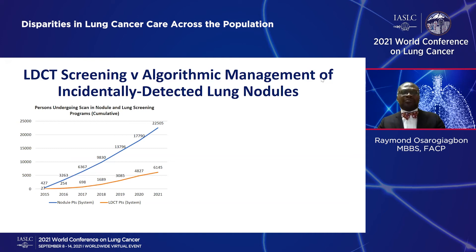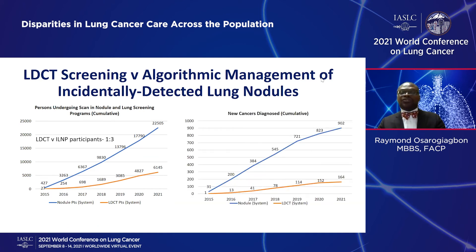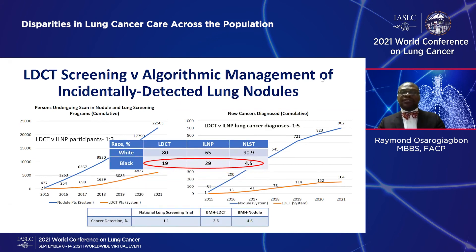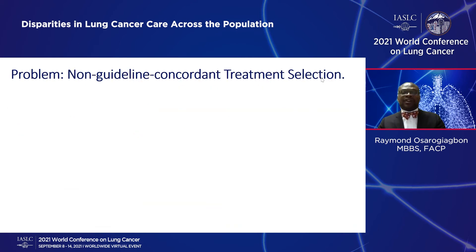How does one go about tackling this problem? One approach is not only to screen eligible patients, but also to proactively manage abnormalities found on x-rays in other individuals through so-called incidental lung nodule programs. In our healthcare system, for every one lung cancer patient diagnosed through the low-dose screening CT program, we have found five lung cancer patients through the incidental lung nodule program. Importantly, the racial disparity can be really narrowed by this means.